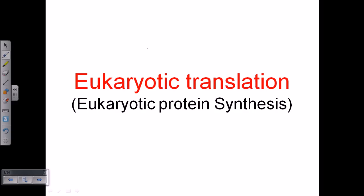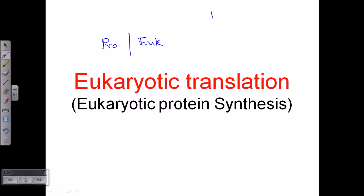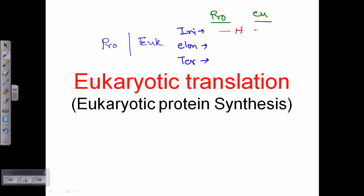Before beginning the actual topic, it's important to note that translation in prokaryotes and eukaryotes is similar in many aspects. If we divide translation into three sections — initiation, elongation, and termination — and compare prokaryotes and eukaryotes, we find that the initiation stage is hugely different between the two. Eukaryotic translation initiation involves many more proteins, complexes, and steps than prokaryotic initiation.